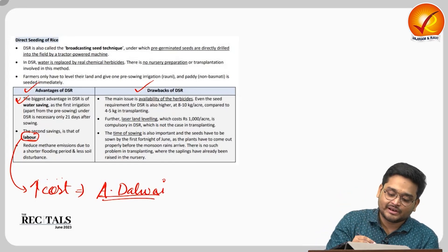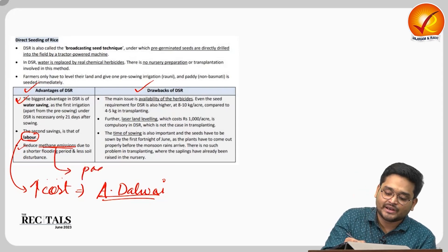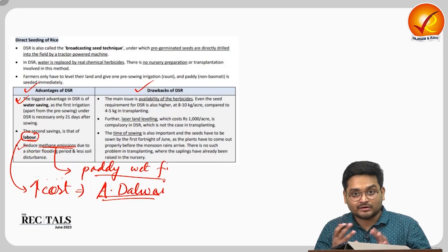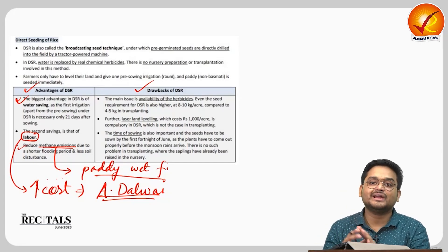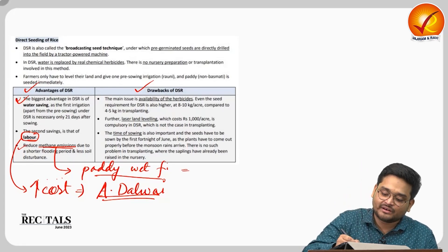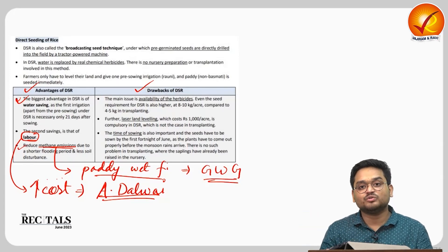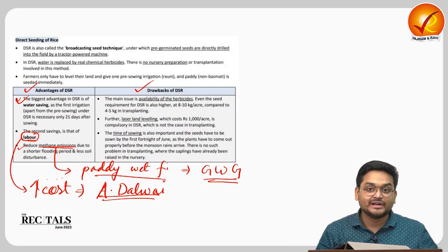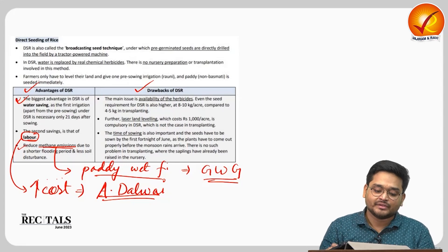DSR also reduces methane emissions. Methane is particularly released from wet paddy fields in connection with soil microorganisms, making agriculture one of the highest emitters of methane. Since methane is a greenhouse gas with greater warming potential than carbon dioxide, reducing wet paddy fields through DSR helps mitigate climate change.